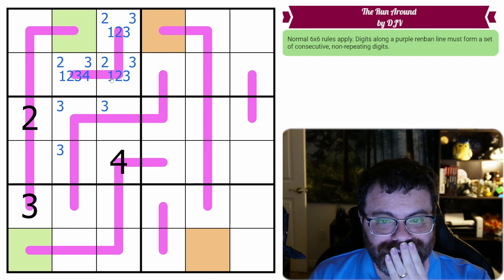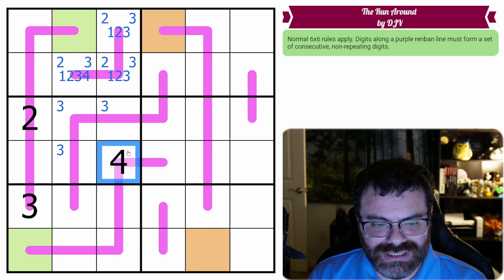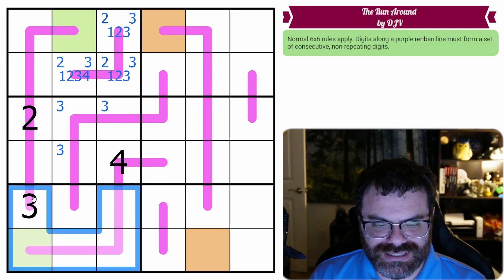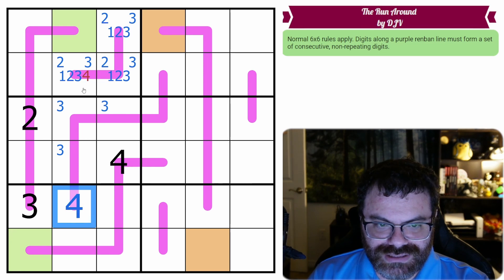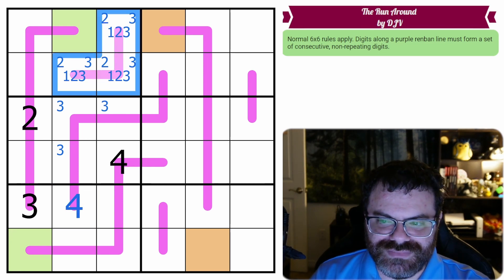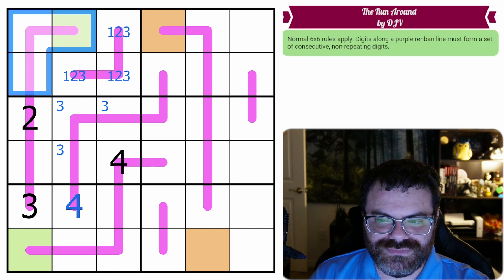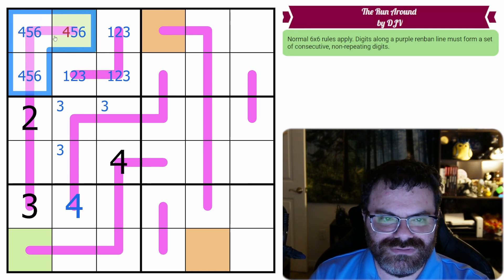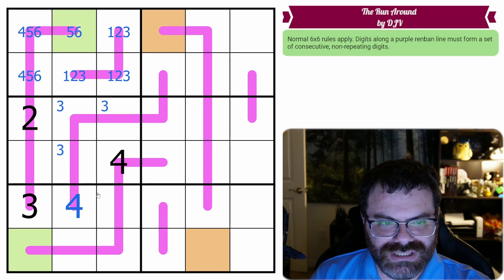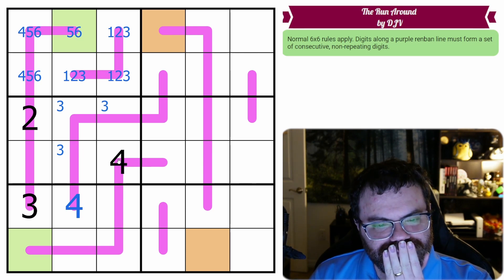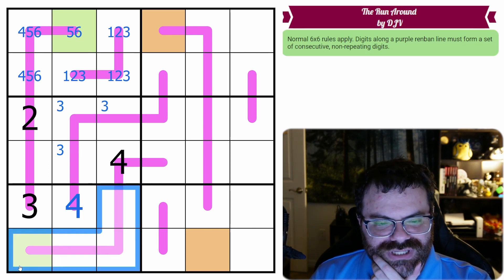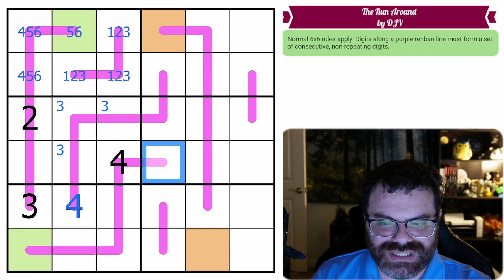We also have this bendy one. So the 4 can't repeat on the RenBand. It isn't 3. So the 4 goes here. So we actually don't have a 4 on this RenBand. So it is just a 1, 2, 3 triple. Let's put 4, 5, 6 here. It can't be 4. So then this one needs to go in the box as well. So it has to be the 3 because it can't be the 4.